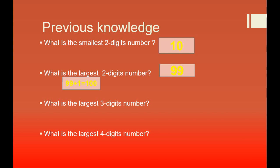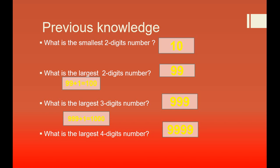Can you tell me what is the largest 3-digit number? That is 999. If we add 1 to 999, then what do we get? We get 1,000. So we can say 1,000 has 4 digits and it is the smallest 4-digit number. Can you tell me what is the largest 4-digit number? Yes, we have 9,999. That is the largest 4-digit number. If we add 1 to 9,999 then we get 10,000, and that has 5 digits. So today we will discuss 5-digit numbers — how we can read the 5-digit number and how we can write the number name of a 5-digit number.